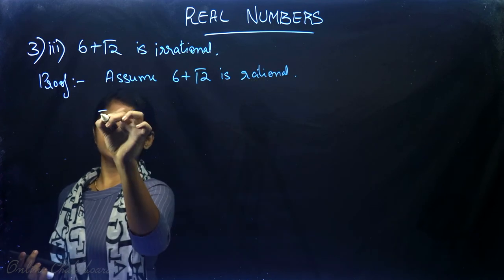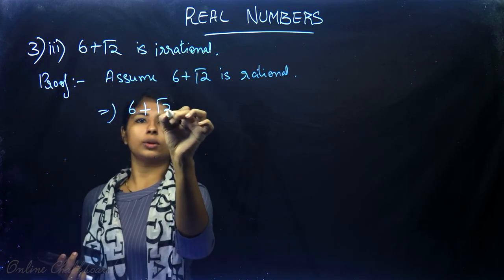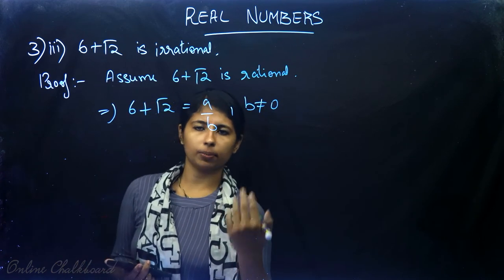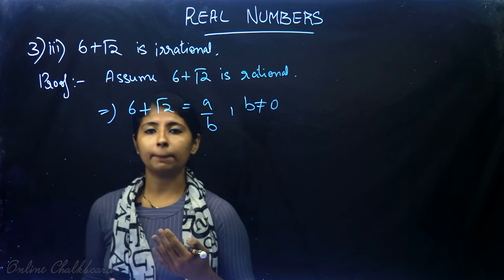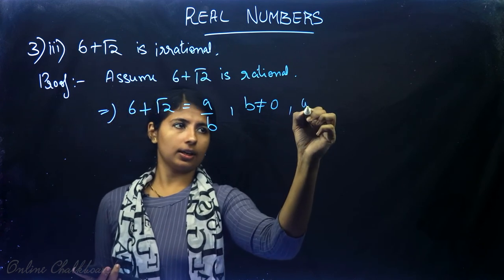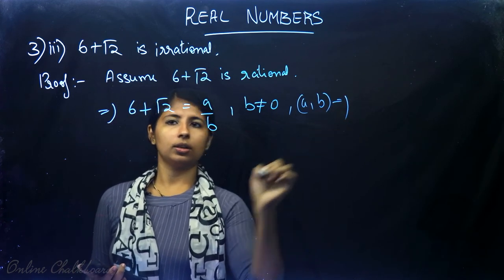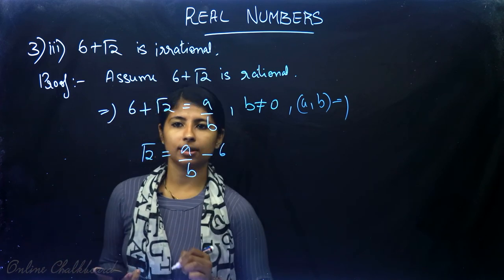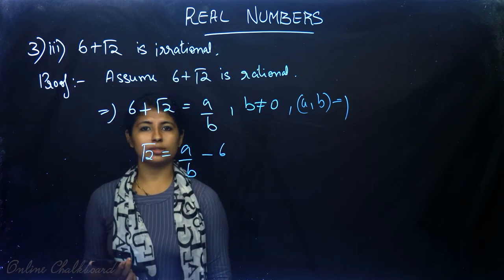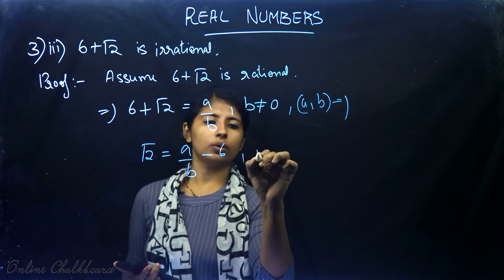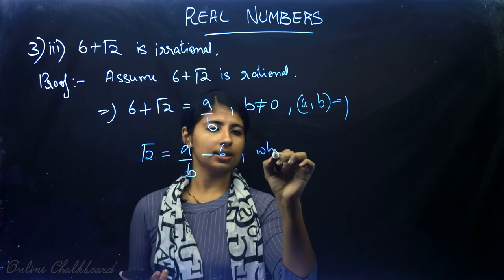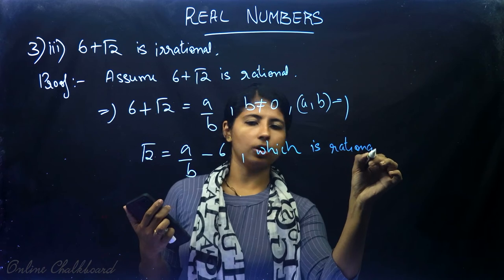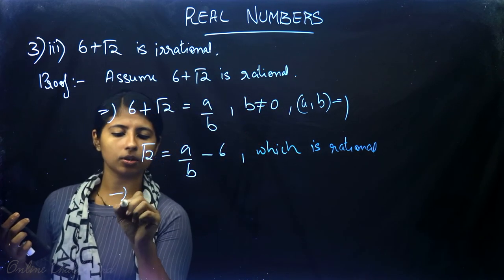This implies 6 + √2 can be written in the form a/b where b ≠ 0, and a and b are co-prime with HCF(a,b) = 1. Rearranging: √2 = a/b − 6. The difference of two rational numbers is also rational, so a/b − 6 is rational, which means √2 is rational — a contradiction.